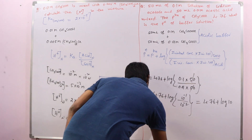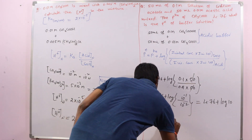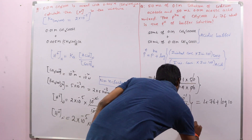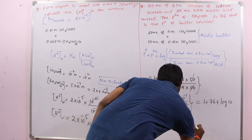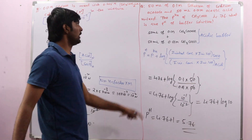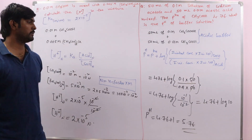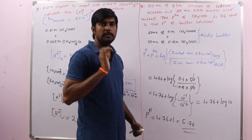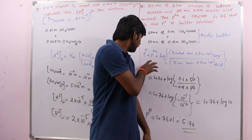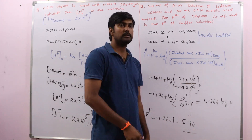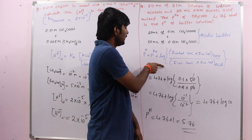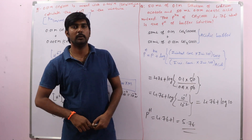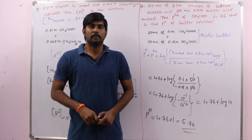Therefore, pH = 4.76 + 1 = 5.76. This is the pH of the buffer solution. We have used different formulas depending on the information provided in the question; always use the suitable formula to get the answer in fewer steps.